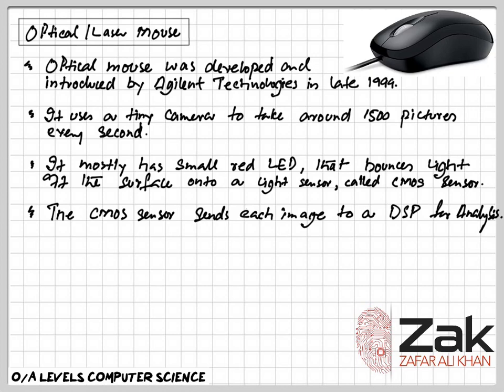Most general-purpose microprocessors can execute DSP algorithms successfully but may not be able to keep up with such processing continuously in real time, because they have to handle many more tasks whereas DSPs are made for one specific task. Dedicated DSPs also usually have better power efficiency, making them more suitable in portable devices such as mobile phones due to power consumption constraints.